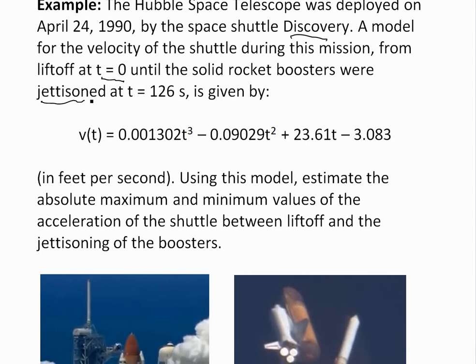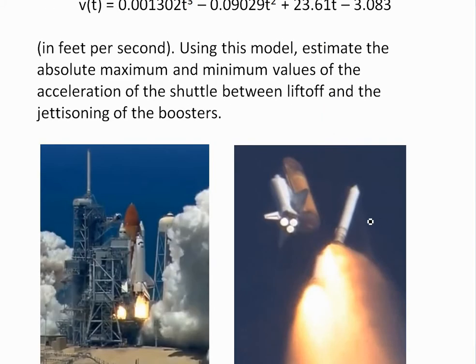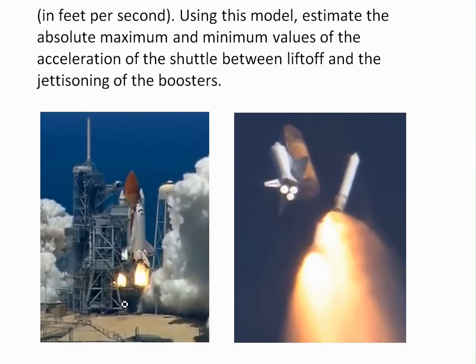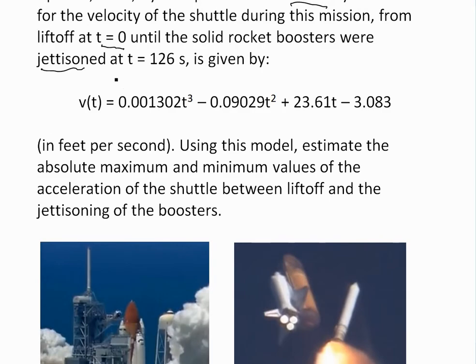this function. Jettisoned just means that the rocket boosters are basically released, so initially at t = 0 and then all the way until they were released, we're modeling that with this function of velocity at time t in feet per second, which is